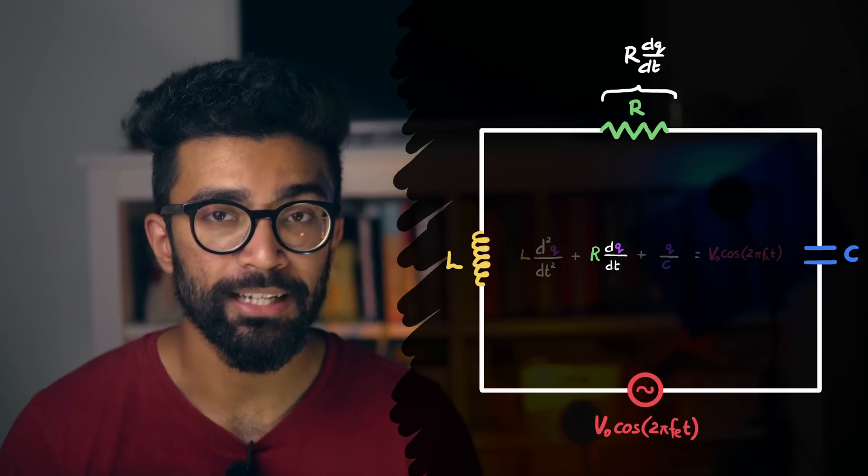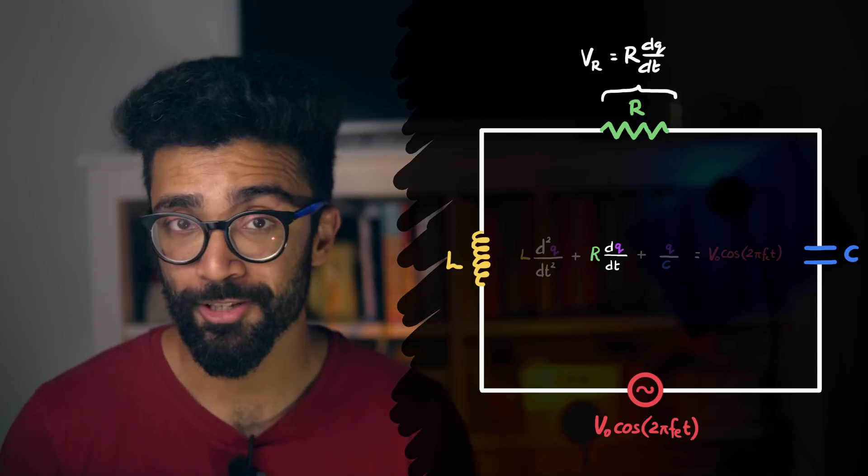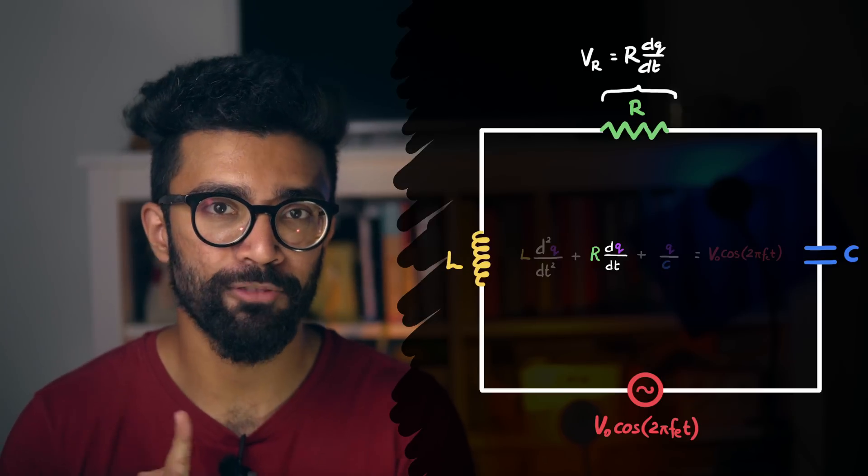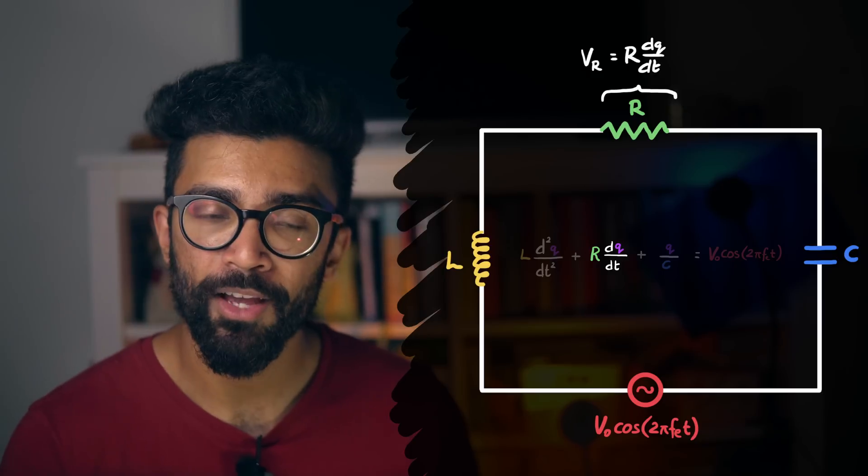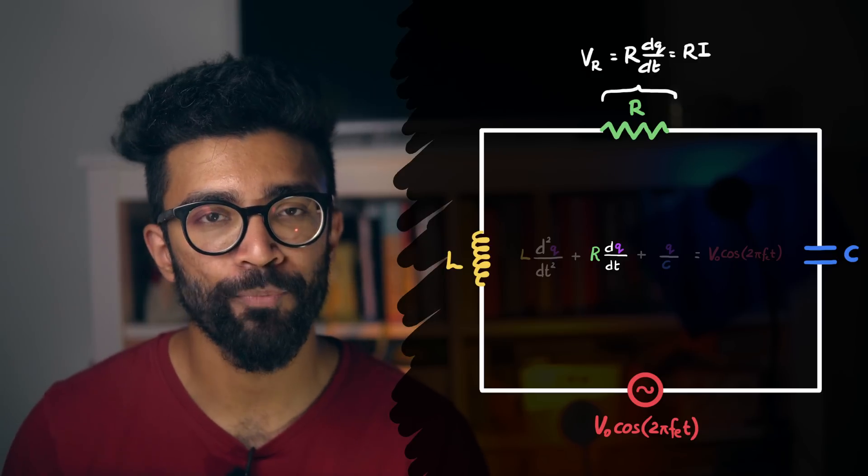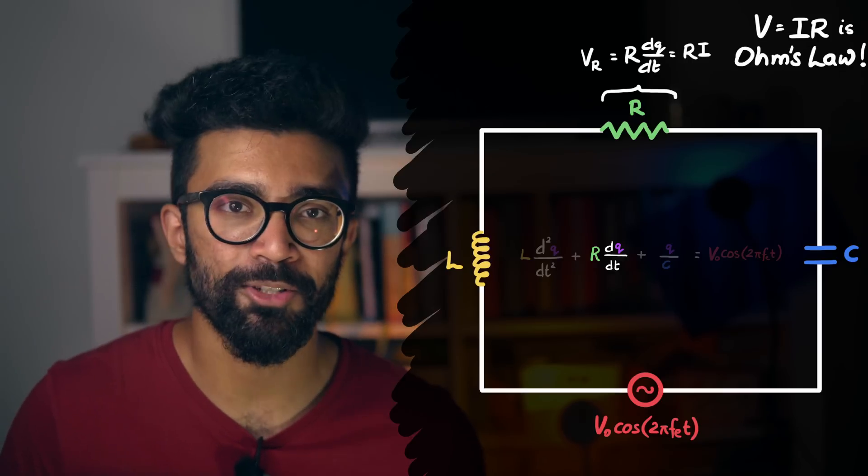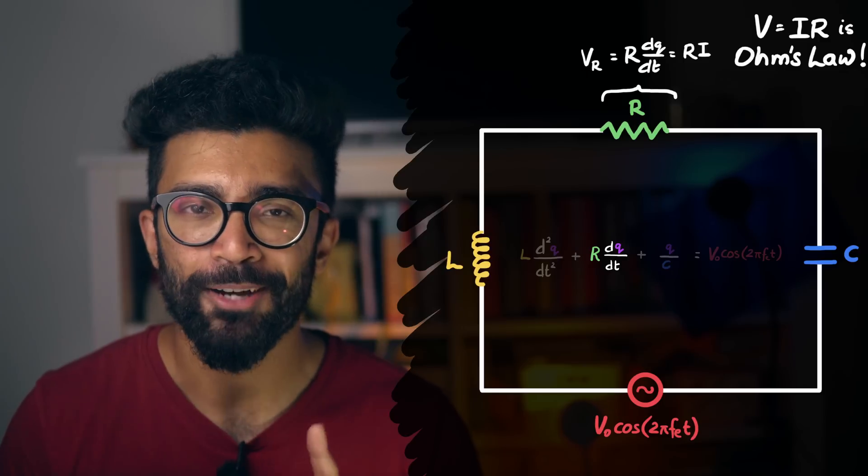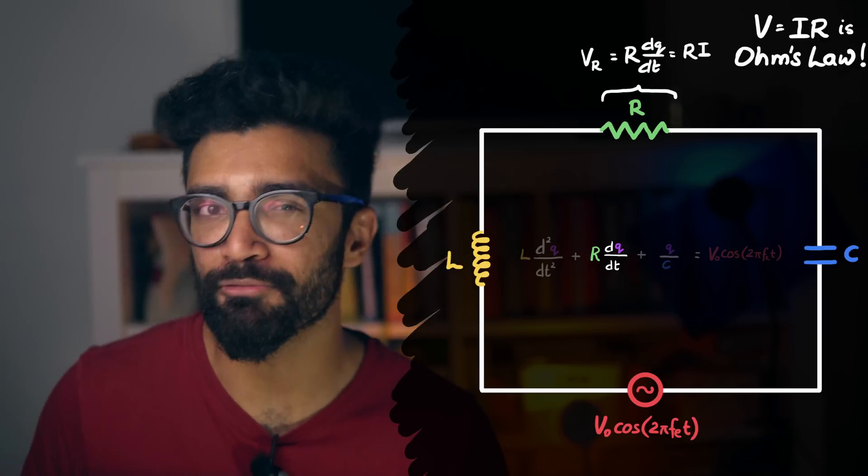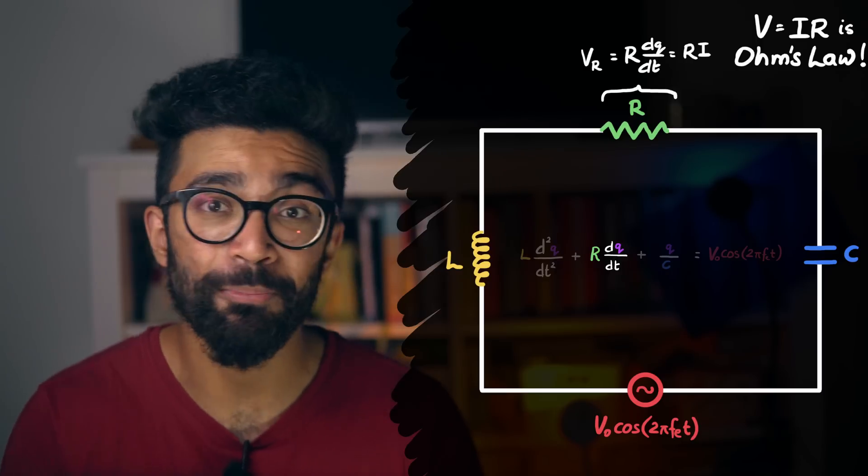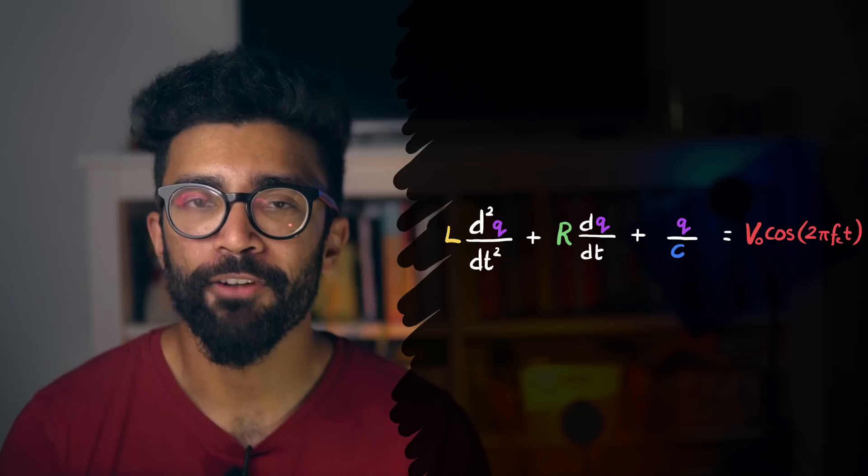Now, this term in our equation essentially looks at the voltage across the resistor. How so? Well, it's because it's the resistance of the resistor multiplied by dq by dt, which is the current in our circuit. We may have seen an equation that looks like this in the form of Ohm's law, which is often taught in high school physics. Now, I have a whole video about Ohm's law and why this technically kind of isn't really Ohm's law, so check it out up here if you're interested, or it's linked in the description below as well.